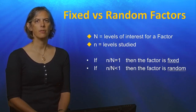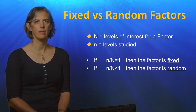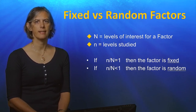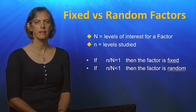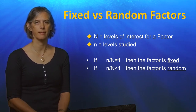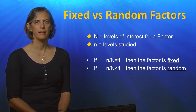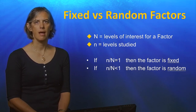A factor is fixed when the levels under study are the only levels of interest. A factor is random when the levels under study are a random sample from a larger population, and the goal of the study is to make a statement regarding that larger population. If the levels studied divided by the levels of interest equals one, then the factor is fixed; if it is less than one, then the factor is random. Typically, the sex of an animal will be a fixed factor — the levels studied are male and female, and for the most part these are the only levels available — whilst the genotype of an animal will be a random factor.